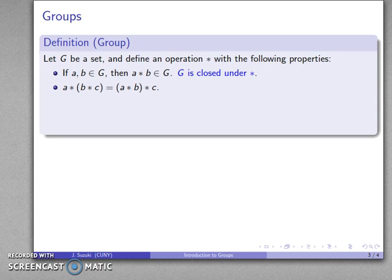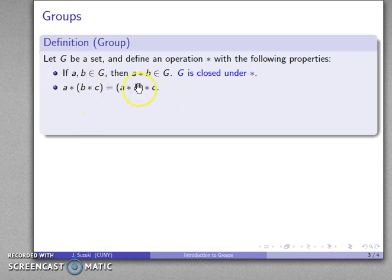Another property of star is associativity: if I look at A star (B star C), where I evaluate B star C first and then star that with A, I get the same result as doing (A star B) first and then starring C. We call this the property of associativity.